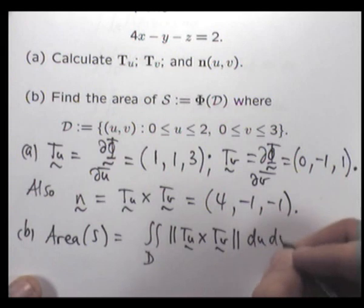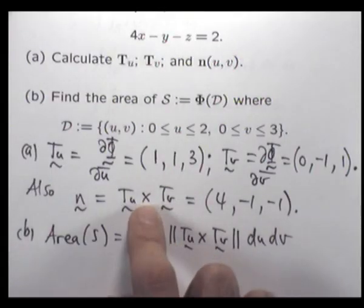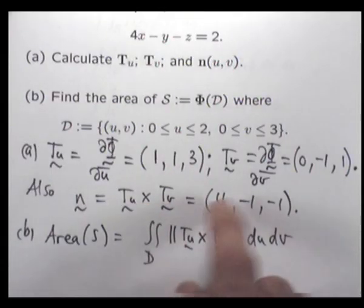Using the previous theorem, we have the following. So we've already got the cross-product here. All we need to do is take its length. The length is going to be something like root 18.